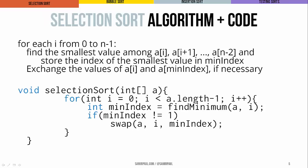Here we can see both the algorithm and some code for selection sort. For each i from 0 to n minus 1, we find the smallest value from a sub i all the way to the end of the array, and we store the index of that smallest value. Then we do the swap — exchanging the values of a sub i and a sub min index. In the Java implementation, I reference a static helper method called swap, which takes an array and two indices — the two elements we want to swap. We'll also use a method find minimum, which returns the index of the minimum element. This cleans up our code and breaks the task into subroutines.